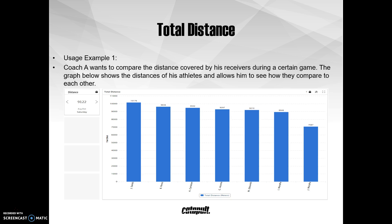Total distance is a popular metric to work with because it is an intuitive measure that a lot of coaches are already familiar with. I've graphed the total distance for each of my receivers across the last game. One thing I can do with this information is make an average for the position so I know what to expect from an average receiver on game day. I can also look at individuals within this position to see if anyone needs to be taken easy on in practice next week, or if anyone needs to be pushed harder to keep up with everyone else.